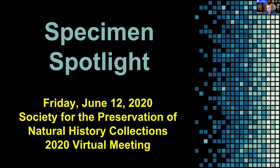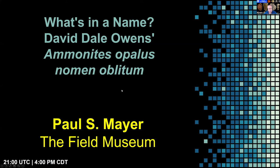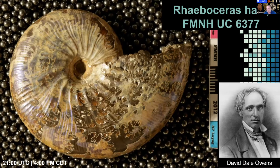This is the Specimen Spotlight section, June 12th, Friday. The first talk is by Paul Mayer from the Field Museum, entitled 'What's in the Name: David Dale Owen's Ammonites opalus, Nomen Oblitum.' I first noticed this type specimen when one of my interns, Alex Lang, was photographing it as part of a pilot project to test how fast we can digitize specimens.